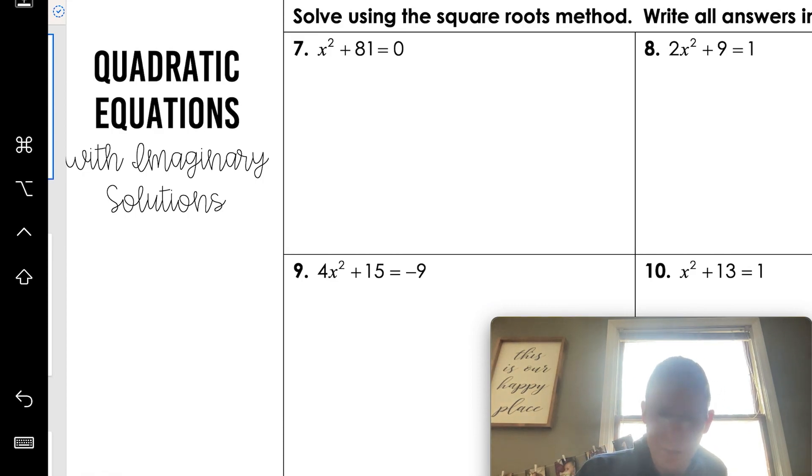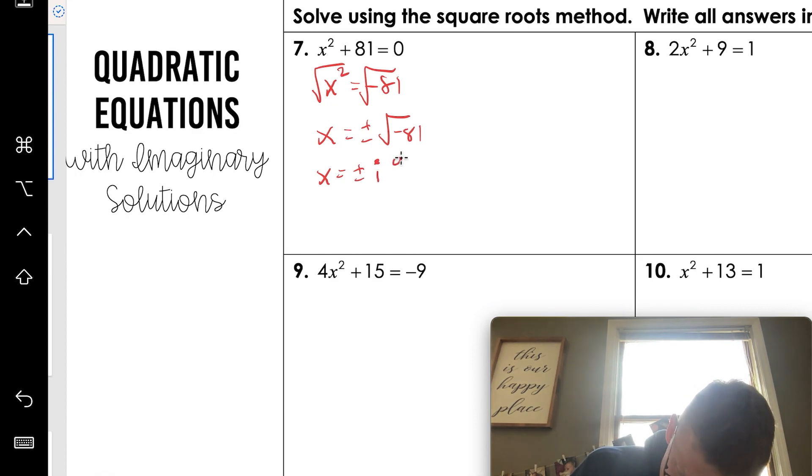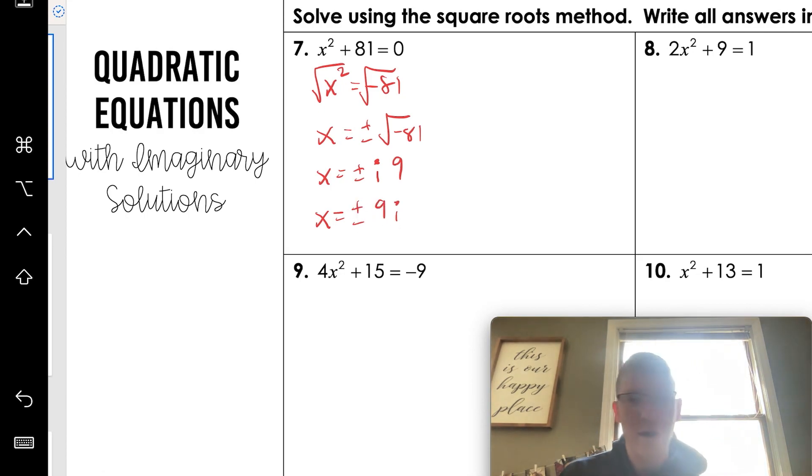So for example, if I'm looking at number seven here, in order to solve this, we're going to take x squared equals negative 81, moving that 81 to the other side. So then we're going to square root both sides. So then I got x equals plus or minus square root of negative 81. So normally we would just stop there and say no solution, negative sign can't do that. But now that we've got an i, we can say x equals plus or minus i nine because nine times nine is 81. And again, just to write it nicely, this is how we like to see our answers.